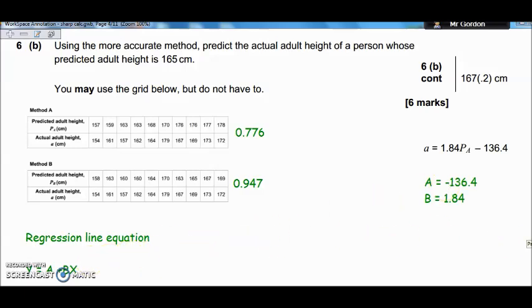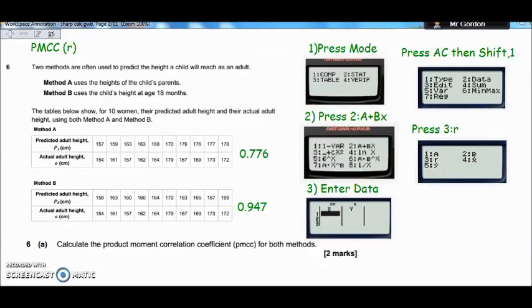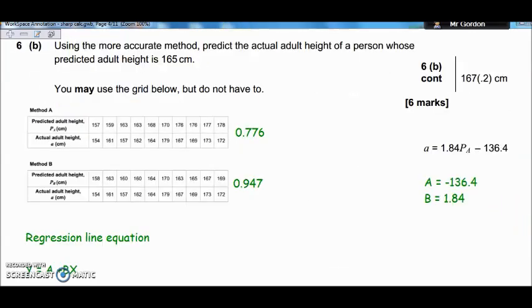Now I need to put them into the regression line equation. And let's just click back to see, on the calculator, when you're doing this, the option we pressed was A plus BX. So the regression line equation is Y equals A plus BX. Now the A value is minus 136.4. So we would just pop that in there. And the B value, which is the gradient, is 1.84. So we've replaced B with that number. And once you've done that, you should be getting something that looks a little bit like this. So this formula here.